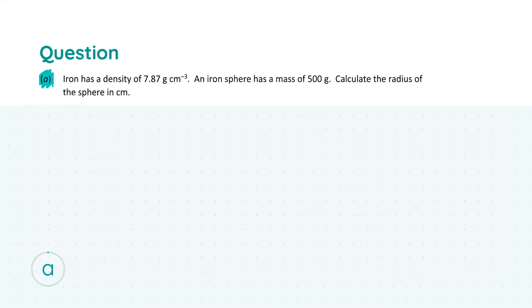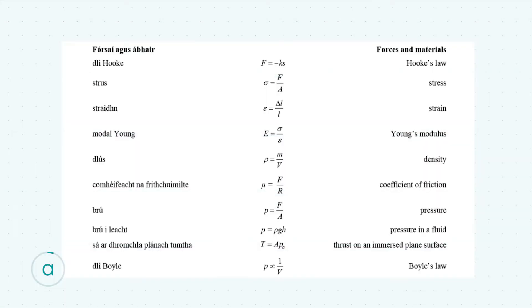Looking at question 6 part A, the first thing we're going to be asked to do is associated with densities. We're told that iron has a density of 7.87 grams per centimeter cubed — it's important that it's in grams per centimeter cubed. An iron sphere has a mass of 500 grams, and we're asked to calculate the radius of this sphere in centimeters. Whenever I'm doing a physics question like this, I'll go straight to my log tables. On page 57, in the forces and materials section, we find a formula for density.